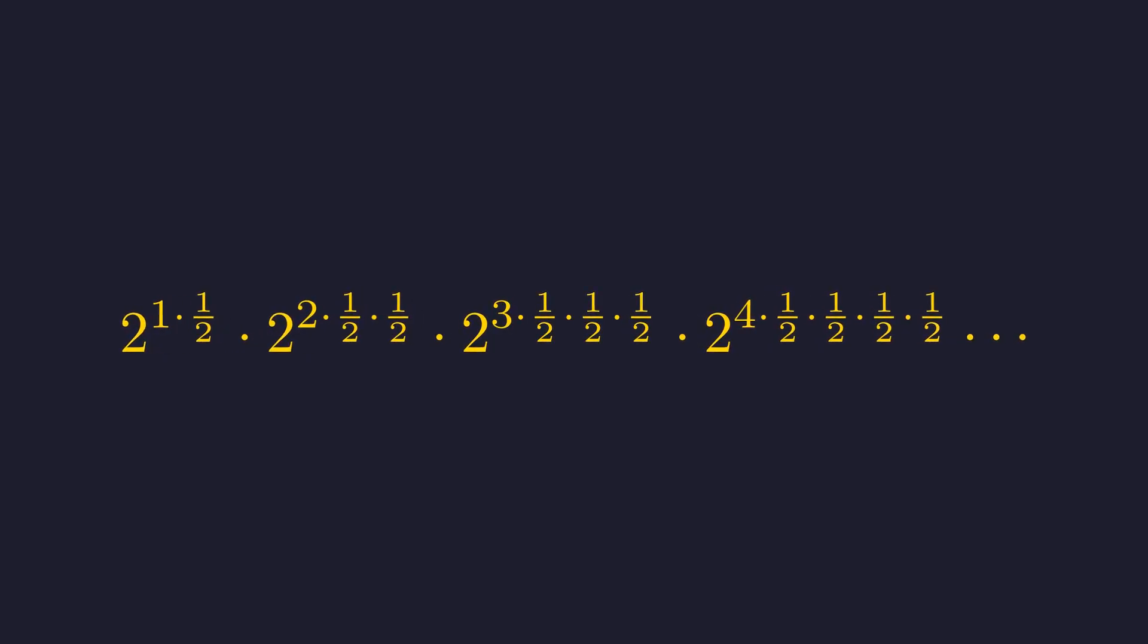Let's multiply these out. So we get 2 to the one-half times 2 to the two-fourths times 2 to the three-eighths, and so on. Notice I'm leaving those fractions unreduced. There's a pattern here that we want to see.